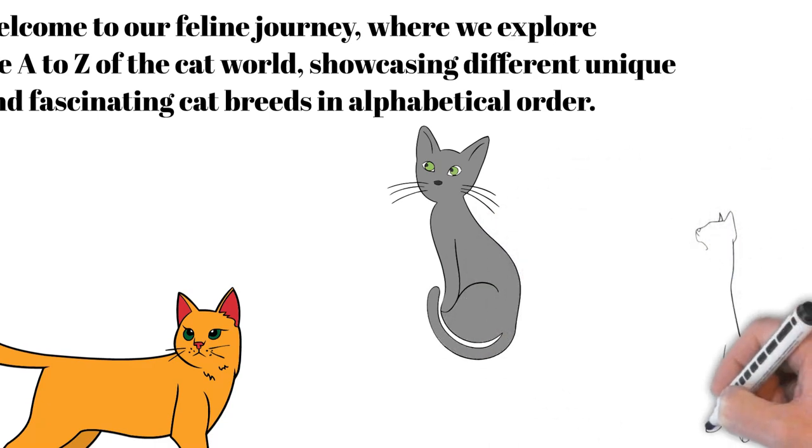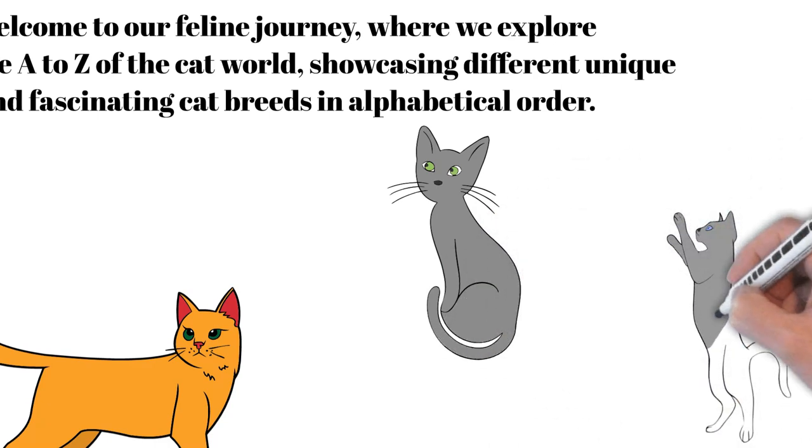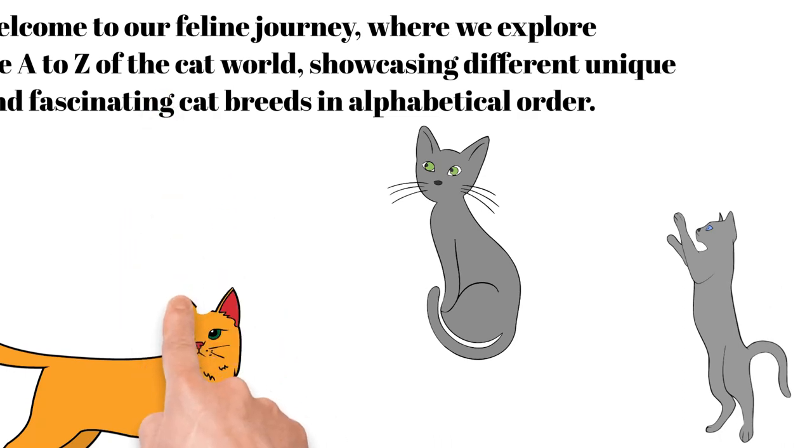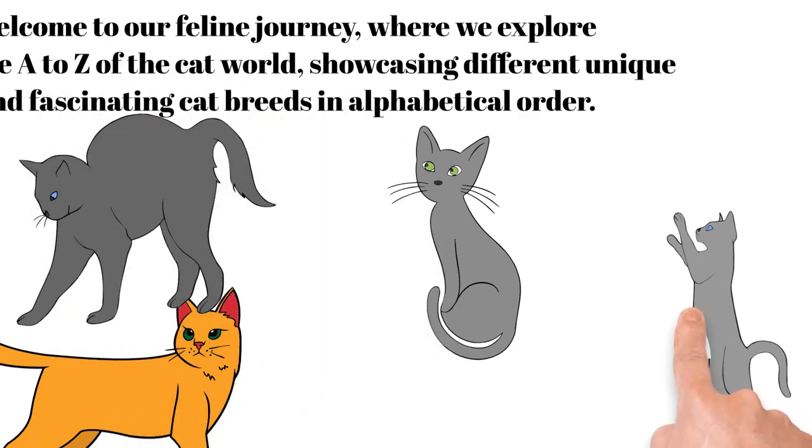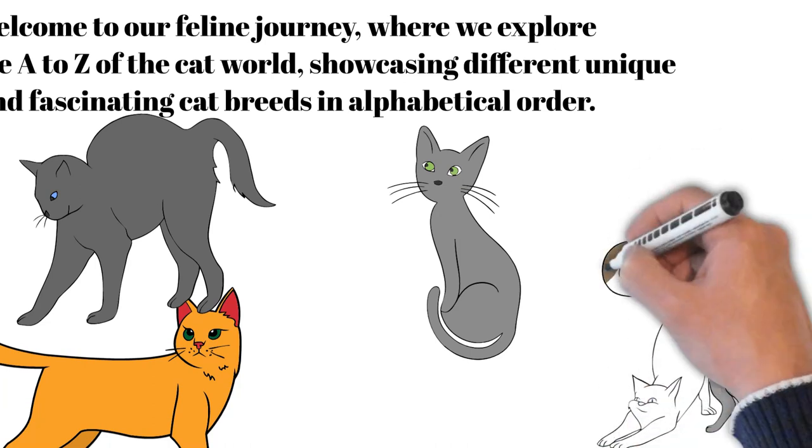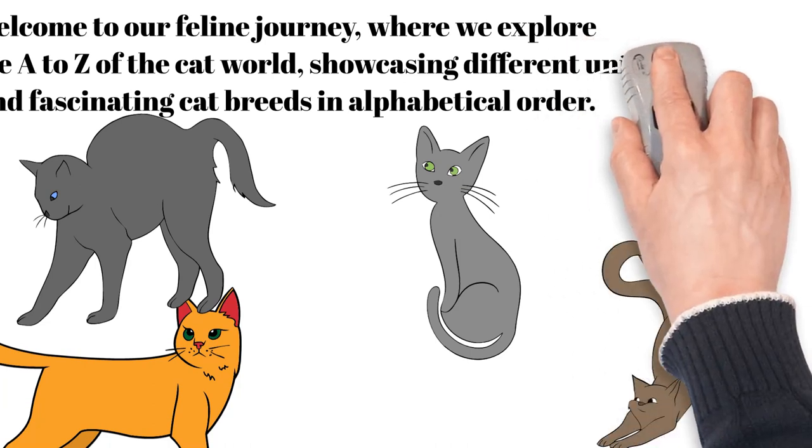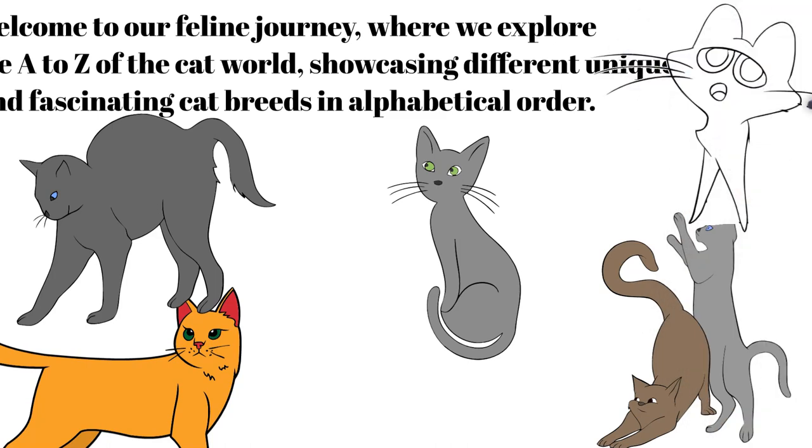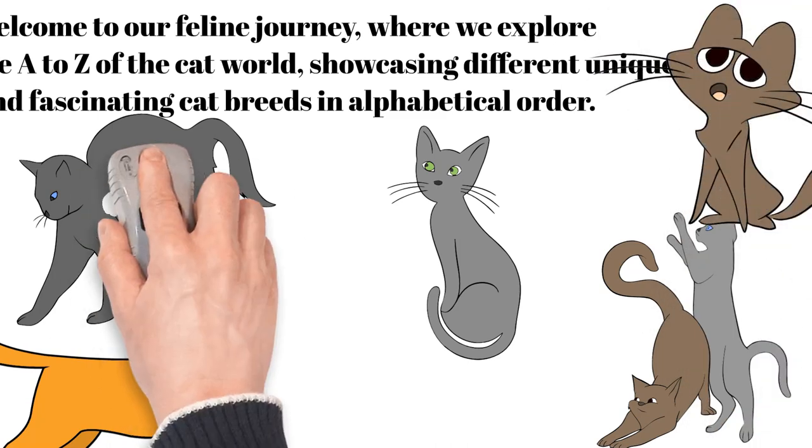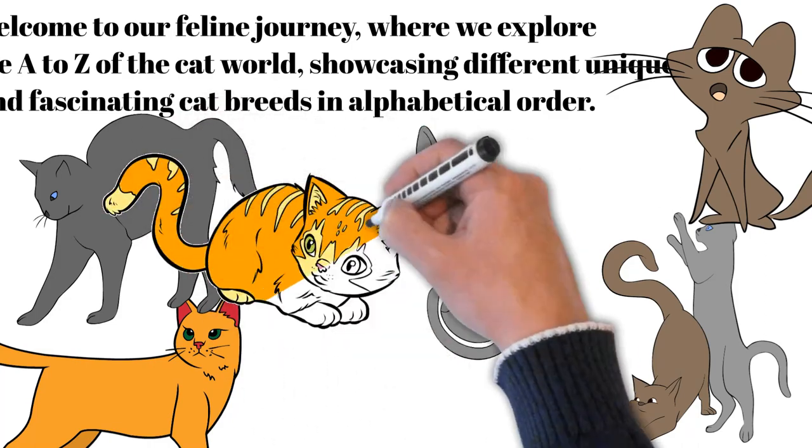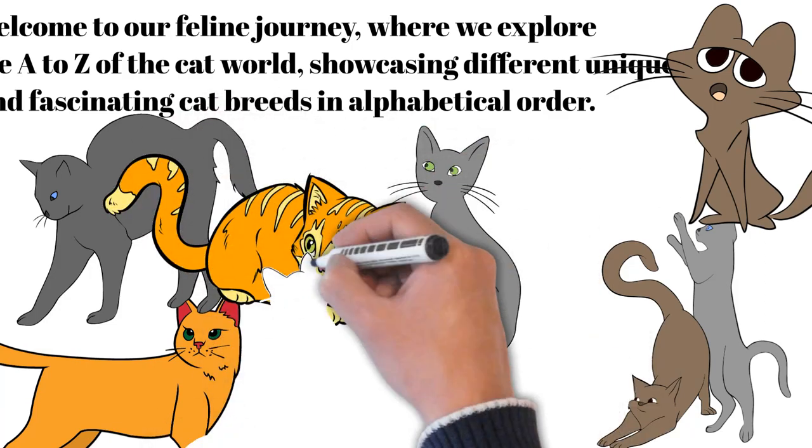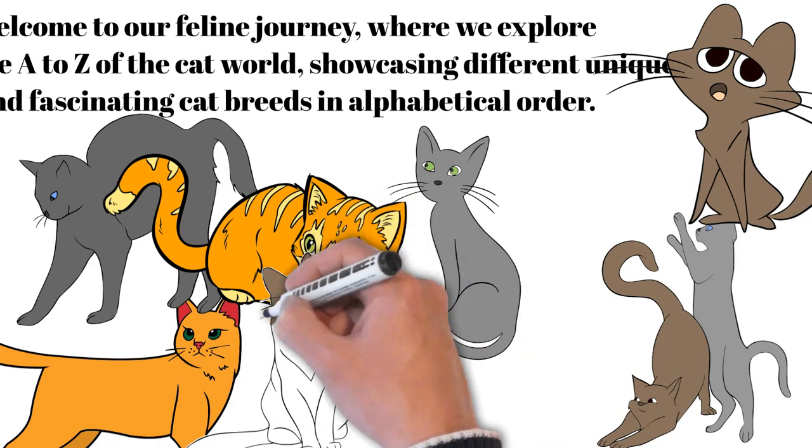From the sleek Abyssinian, known for its regal appearance and playful spirit, to the rare and luxurious Zelkova Serata, each breed brings its own distinctive charm and personality. Along the way, we'll encounter the majestic Bengal with its wild looks, the cuddly and affectionate Ragdoll known for its striking blue eyes, and the intelligent Siamese with its vocal personality and elegant stature.